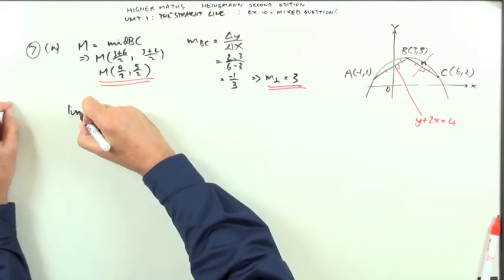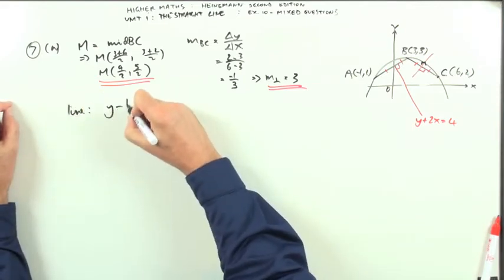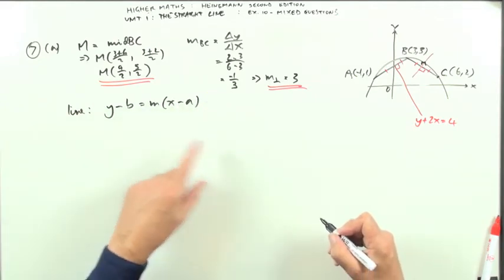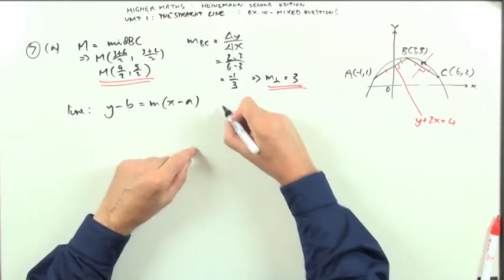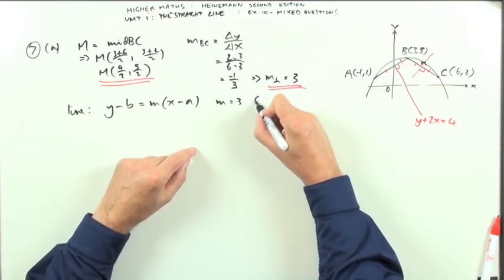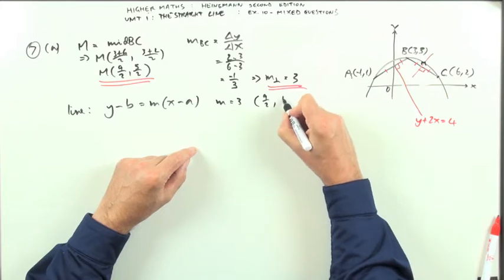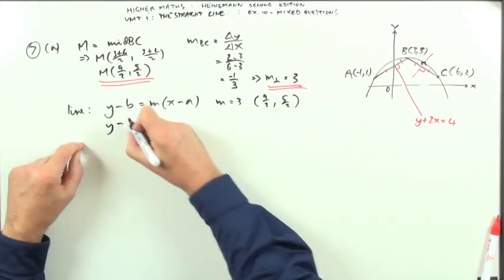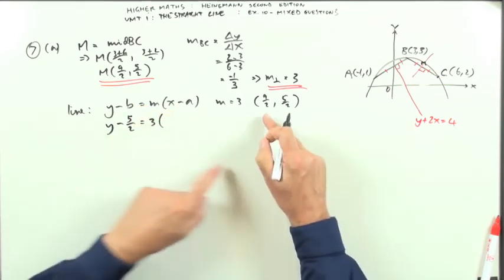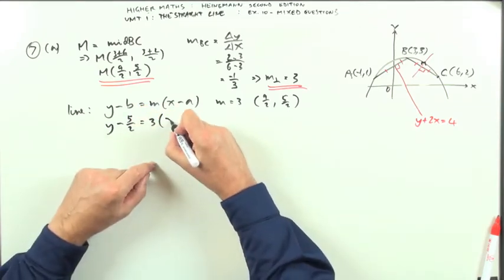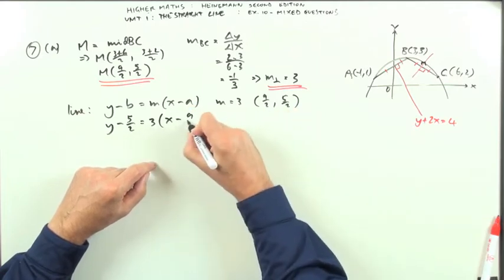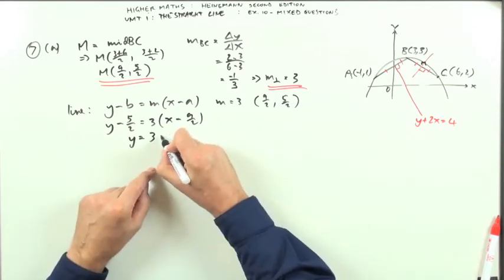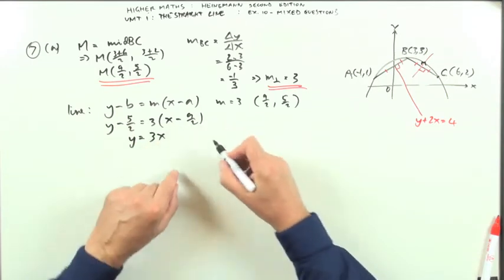Now we can get the line that's required. Using the point-slope formula, y minus b equals m times x minus a. M is 3 and the point I'm going to use is 9 upon 2, 5 upon 2. So y minus the y coordinate, y minus 5 upon 2, equals 3 times x minus the x coordinate, x minus 9 upon 2.